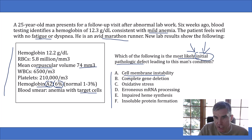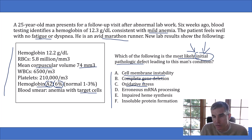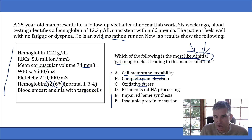Answer choice B says complete gene deletion — that is not correct. In alpha thalassemia, the cause is usually a gene deletion, but in beta thalassemia, the cause is usually a gene mutation. This answer choice was put in hoping you'd confuse alpha and beta thalassemia. Answer choice C says oxidative stress, which is a classic cause of anemia in patients with G6PD deficiency. It also occurs in patients with thalassemia, so it could be right — but I'm going to hold off because they're looking for the most likely initial pathologic defect.